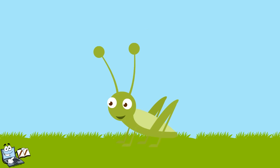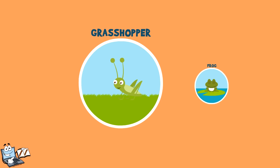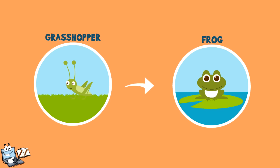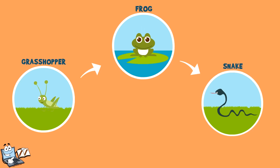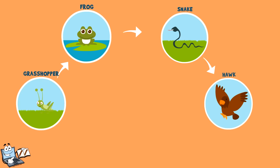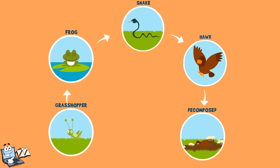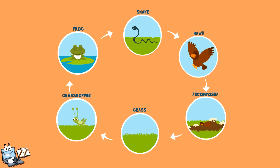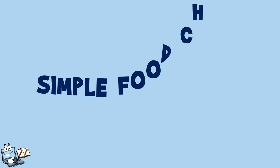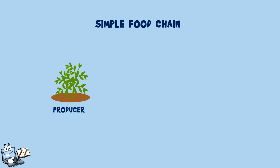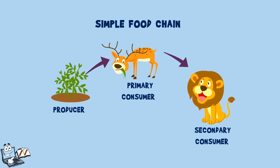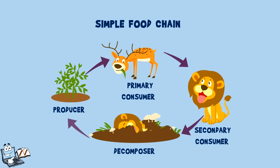These bacteria and fungi are called decomposers, and they are also a very important part of a food chain. Look at this food chain: the grasshoppers eat grass and they are eaten by the frog, the snake eats the frog, and the hawk eats the snake. The hawk dies and is decomposed by bacteria and fungi, becoming nutrients used by the grass. A food chain with one producer, one primary consumer, one secondary consumer, and decomposers is called a simple food chain.